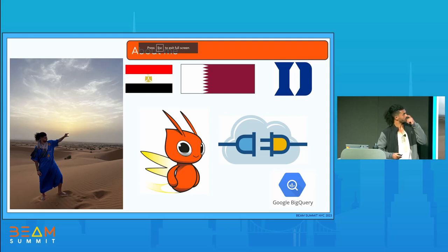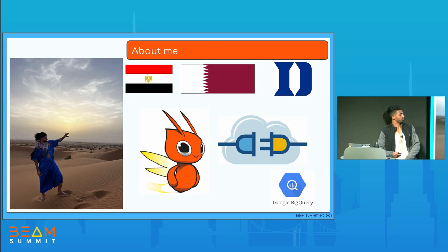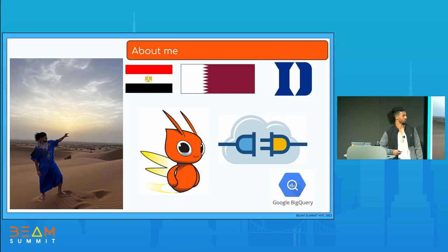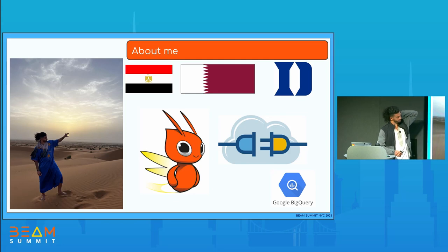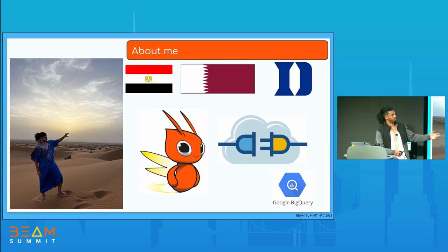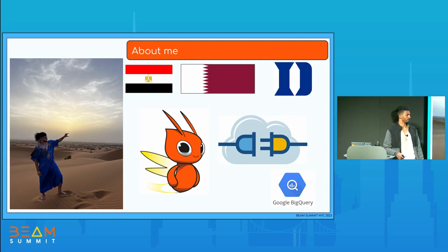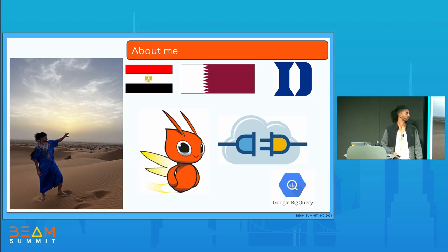A little bit about me: I'm Egyptian, I was born and raised in Qatar, and I came to the US for university at Duke. Like Chaim said, I've been working at Google as a software engineer for almost two years, and most of that time I've been working on Beam connectors and IOs, mainly the BigQuery IO connector for Java and Python SDKs.